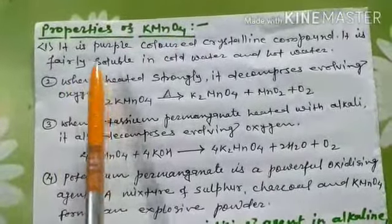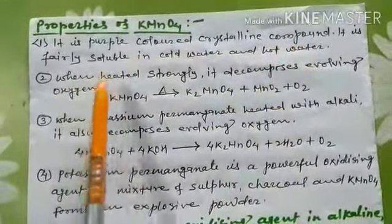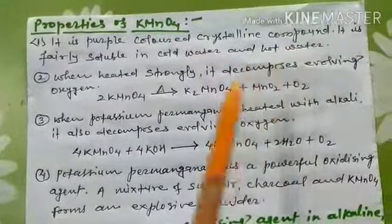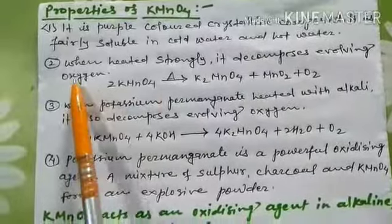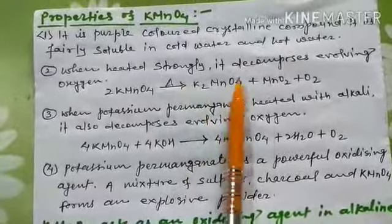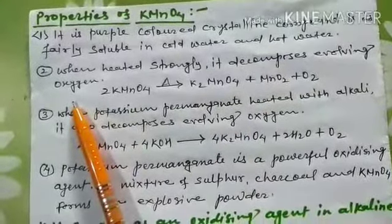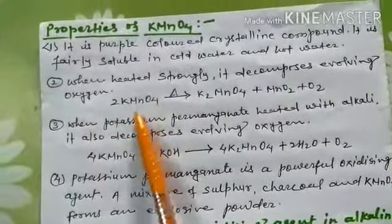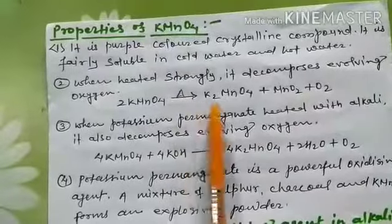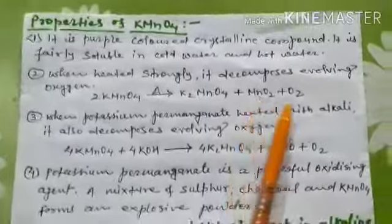Potassium permanganate is a purple-colored crystalline compound. It is fairly soluble in cold water and hot water. When potassium permanganate is strongly heated, it decomposes and evolves oxygen gas. The formula of potassium permanganate shows that when it is heated strongly, it decomposes into potassium manganate, pyrolusite ore (MnO₂), and O₂.